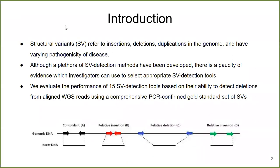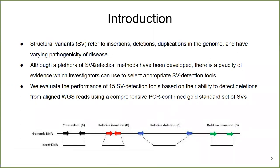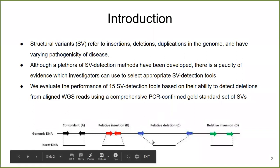Structural variants, also called SVs, are basically regions of the genome that refer to insertions, deletions, inversions, and duplications, and can cause various diseases. Although a lot of SV detection tools have been developed in the past, a major limitation of the benchmarking studies carried out so far is that the exact coordinates of the start and end position of the SV are not known, and hence it makes it very hard for researchers to choose appropriate SV tools.